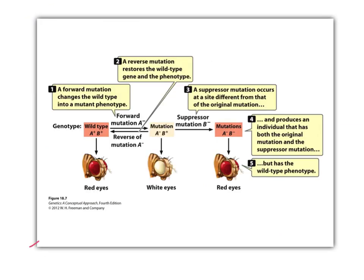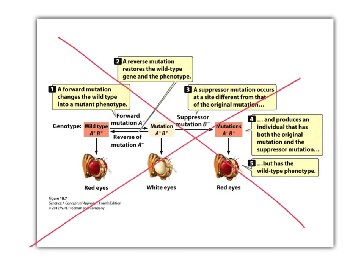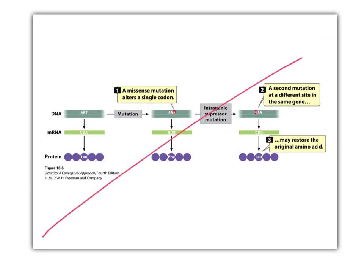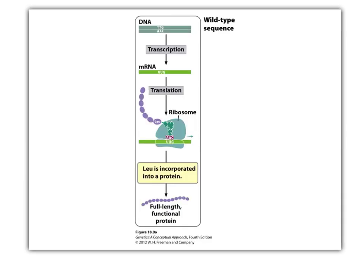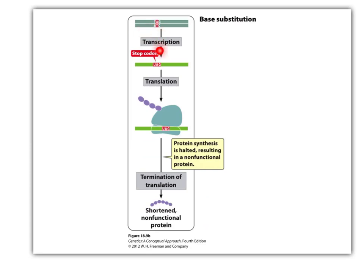We're skipping forward and reverse mutations — very important for genetics with Drosophila and mutational analyses, but we don't have time. To illustrate: DNA transcription and translation on the ribosome makes a protein. If there's a base substitution that results in a stop codon in the mRNA, that is a nonsense mutation — it halts protein synthesis.